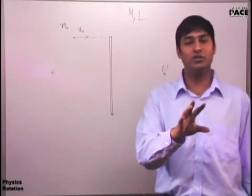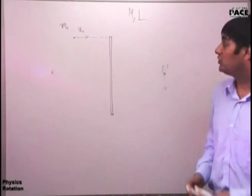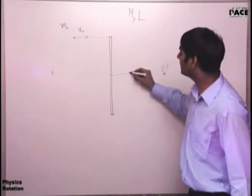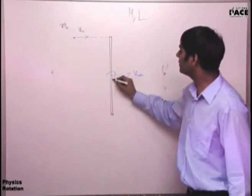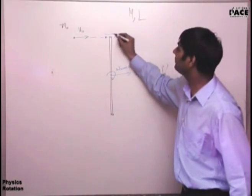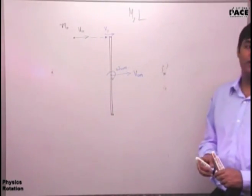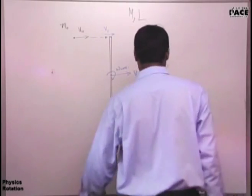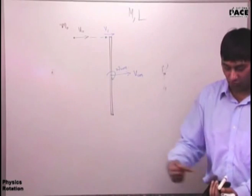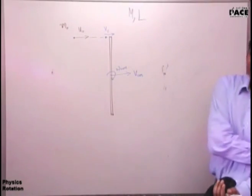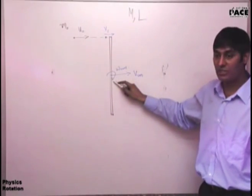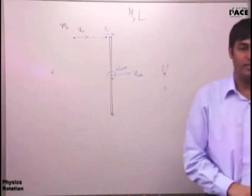So when we want to define the motion of a rigid body, we just define the Vcm and omega cm. So you have to tell me, after collision, this rod's velocity of center of mass what will happen, the angular velocity about center of mass what will happen, and the velocity of the point mass after collision. There are three unknowns.